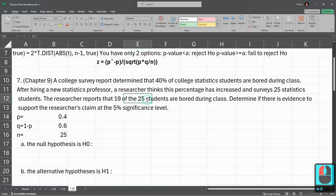19 of the 25 in this new survey are bored during class and determine if there's evidence enough to support the researcher's claim. The researcher thinks the percentage has increased and surveys 25 more students. So we're going to have a P hat now. Actually, I'm going to do how many students are bored. So it was 19 students.